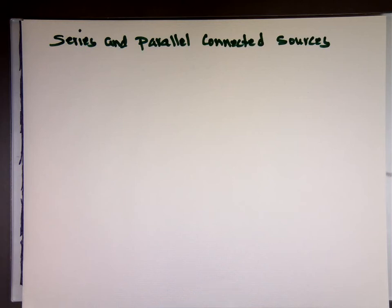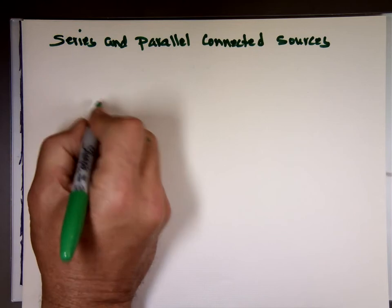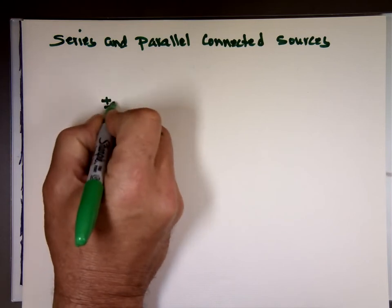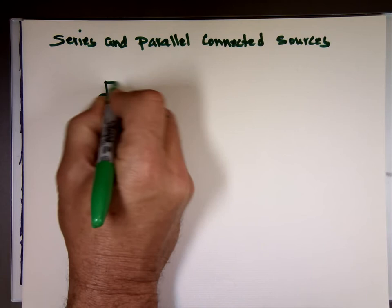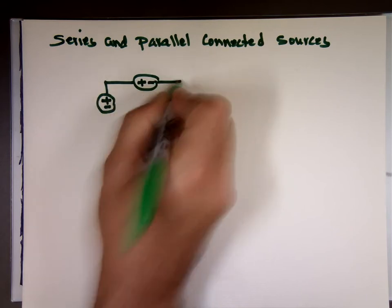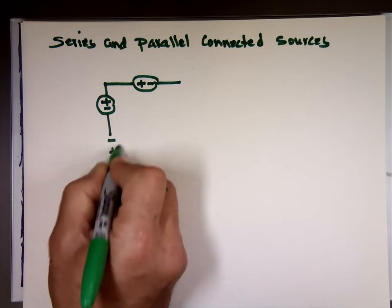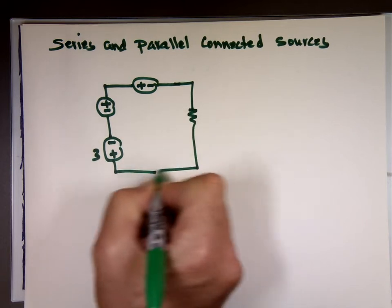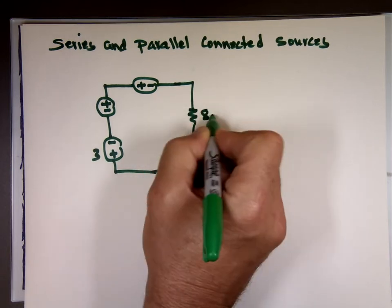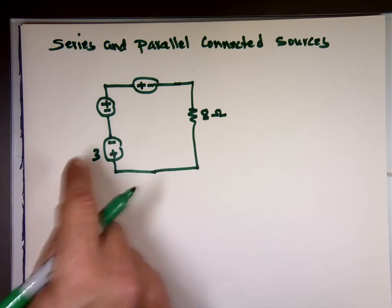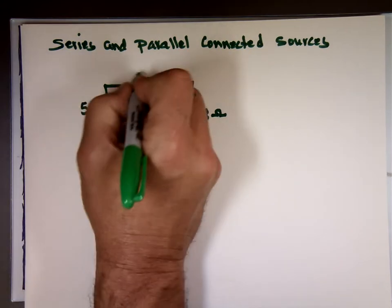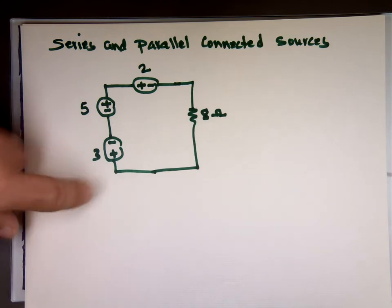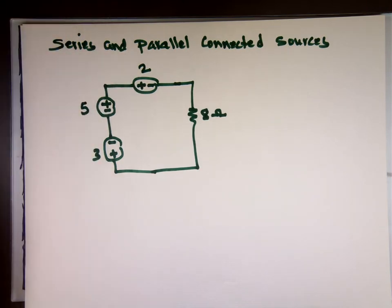Now in this section, what are you going to do when you have sources connected in parallel? Sources connected in series. For example, watch this. If we have this problem, these are voltage sources connected in series. Let's make this five, this is two. Can I take these three sources and replace them with one source equivalent to that?